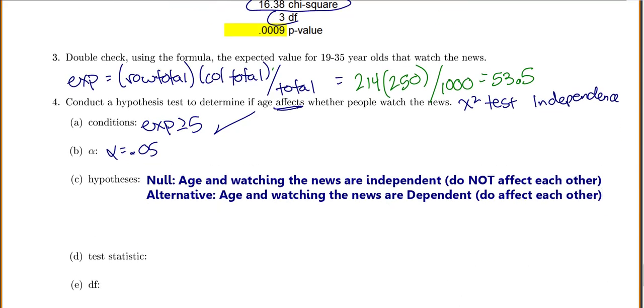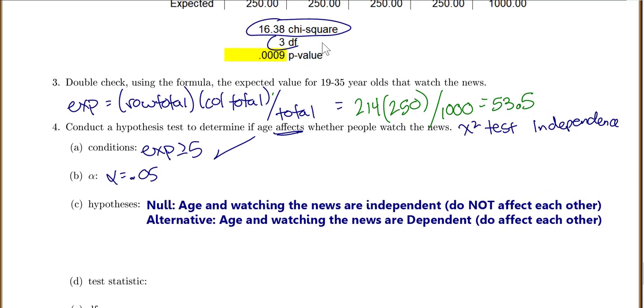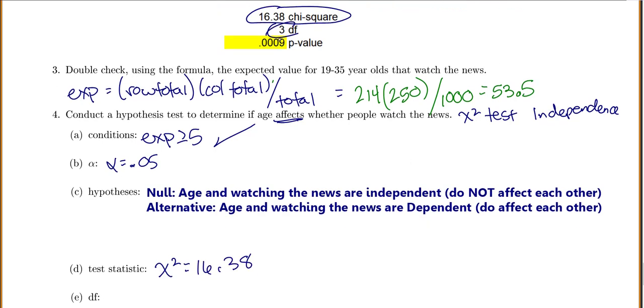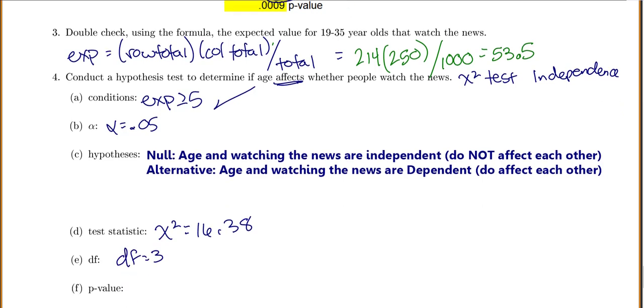Then for our test statistic, we just look at our output, which is a lot easier than actually doing it by hand. My test statistic is 16.38. I have 3 degrees of freedom, and my p-value is 0.0009.